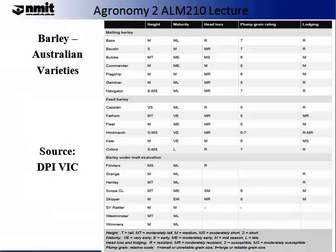The following table produced by DPI Victoria is a summary of the most popular barley varieties grown in Australia. You will see that there are two main categories: malting and feed barley. Of these they have different heights, maturity, head loss, grain rating and loading. Please take some time to review these varieties and become familiar with the different aspects — what makes a good malting barley versus a good feed barley?